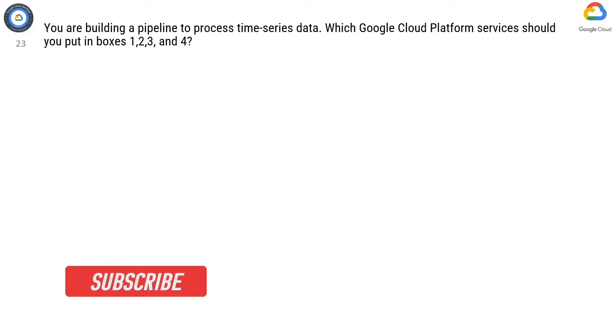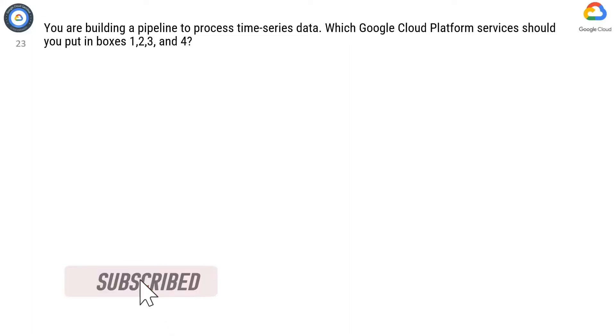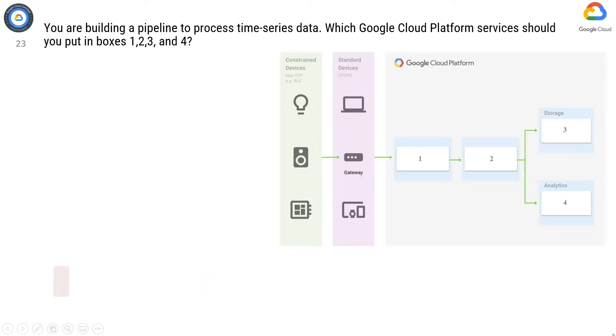Question 23. You are building a pipeline to process time series data. Which Google Cloud Platform services should you put in boxes 1, 2, 3, and 4?